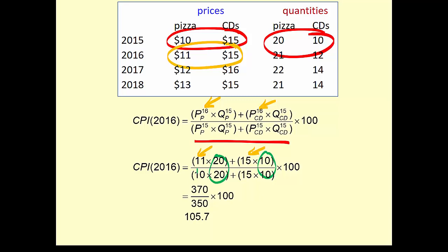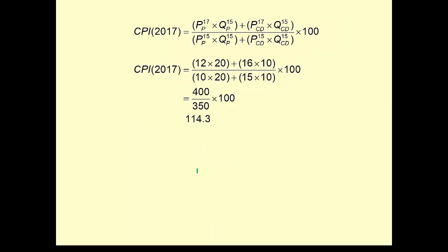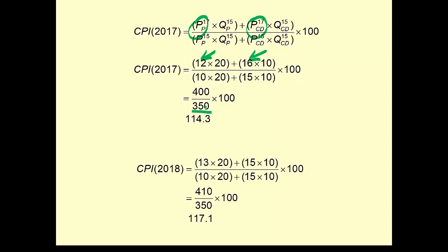Plugging in the values, we get 370 over 350 times 100, giving a CPI of 105.7 for 2016. For 2017, we use the 2017 prices and get 400 over 350 times 100. Note the denominator stays the same for each CPI calculation. For 2018, using the 2018 prices, we get an index of 170.1.